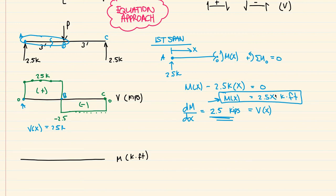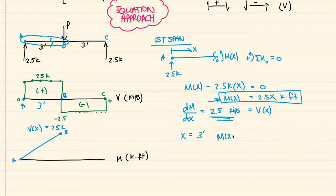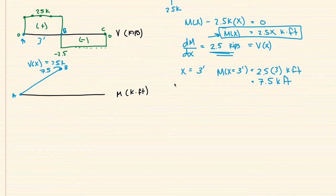Since this equation has x raised to only the first power, we know that it is linear. Our moment diagram is going to go up from A to point B in a straight line. If we plug in x equal to three feet — so M of three feet equals 2.5 times 3 kip-feet — that gives us the moment at midspan at three feet of 7.5 kip-feet. So this value right here on the diagram is 7.5. I'm going to scroll down so we have more room to work.